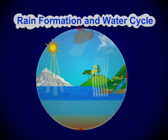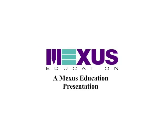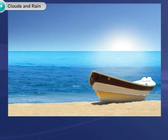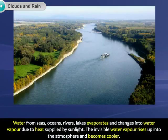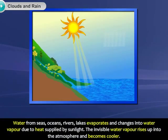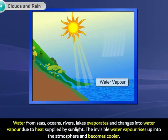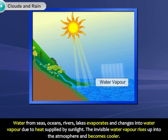Rain Formation and Water Cycle. Water from seas, oceans, rivers, and lakes evaporates and changes into water vapor due to heat supplied by sunlight.